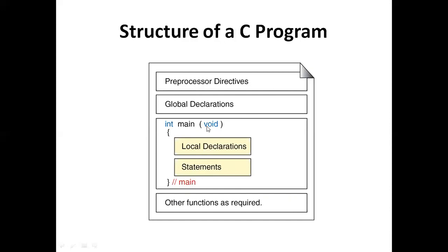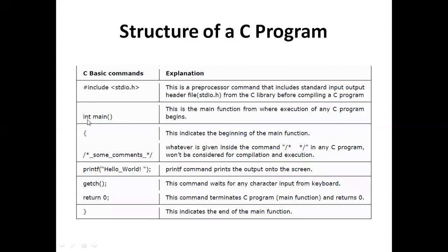For a simple Hello World program, we use the main method. The first line is '#include <stdio.h>' — this is a preprocessor command. Every preprocessor command starts with a hash (#). We include the stdio.h header file to support input and output operations. The main method begins with 'int main' or 'void main', followed by an opening brace to start the main block.